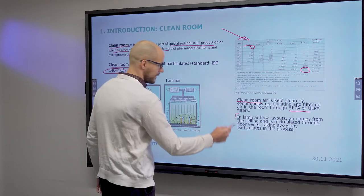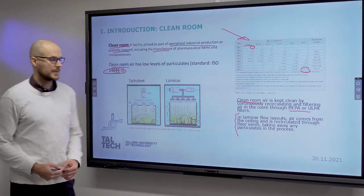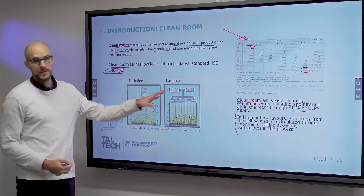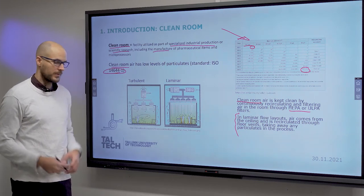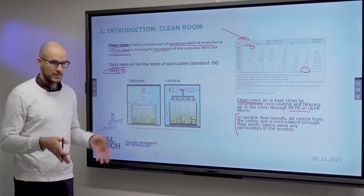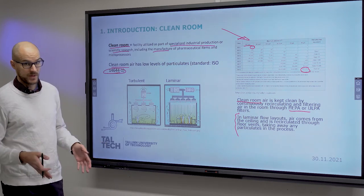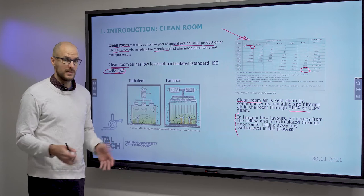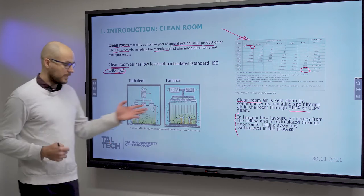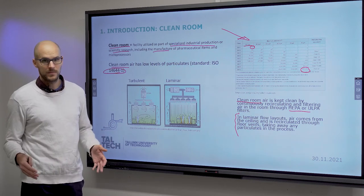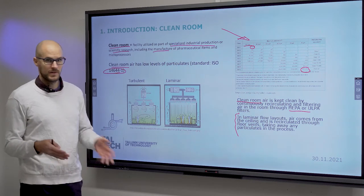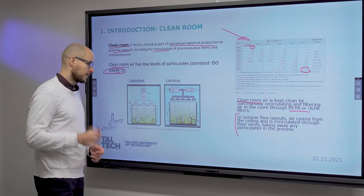Laminar flow is most commonly used to circulate the air and to push out the microparticles that might come in with objects. Objects and people are transferred from the outside to the inside through airlocks, where they are subjected to an air shower. And you will see that in the next slide.